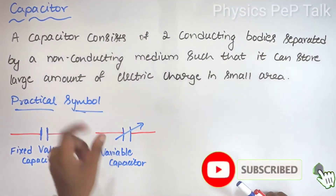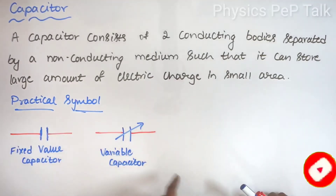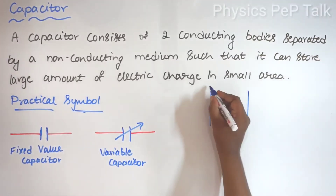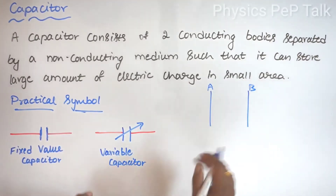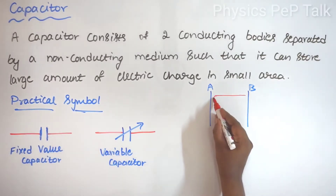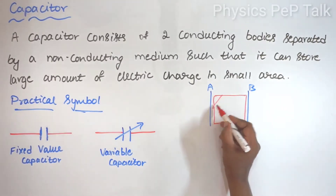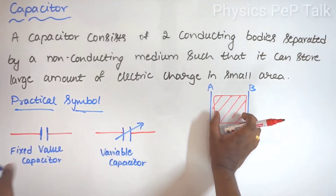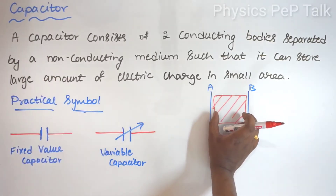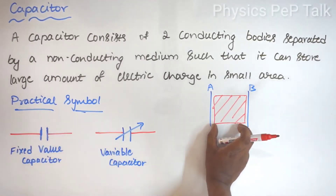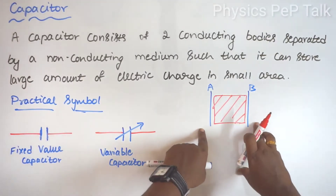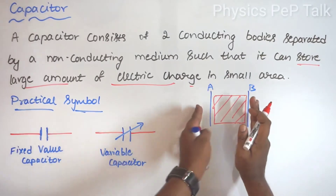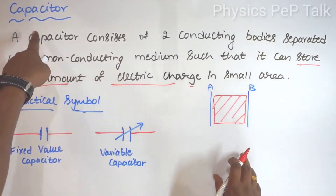A capacitor consists of two conducting bodies separated by a non-conducting medium. Let body A and body B be the two conducting bodies. I will place a non-conducting medium — a dielectric such as air or vacuum — between them. This whole device will act as a storing agent, able to store a large amount of electric charges in a small area. This complete device is called a capacitor.